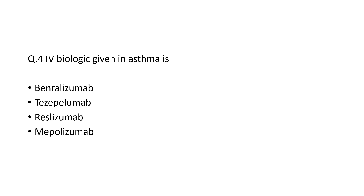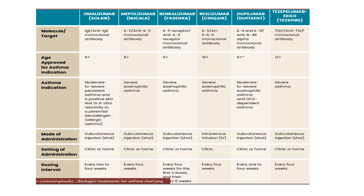Question number four: which biologic is given intravenously in asthma? There is only one IV biologic for asthma and that is Reslizumab. This table shows Omalizumab, Mepolizumab, Benralizumab, Reslizumab, Dupilumab, and Tezepelumab — and the mode of administration shows that every monoclonal antibody is given subcutaneously except Reslizumab, which is given intravenously.